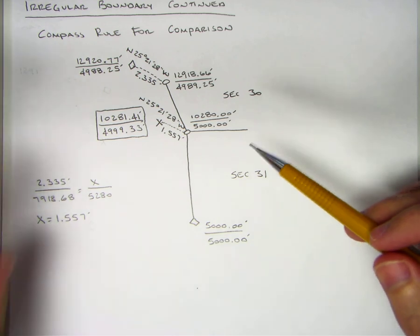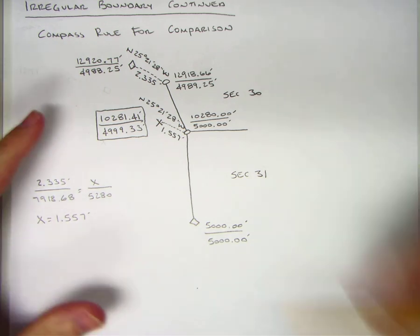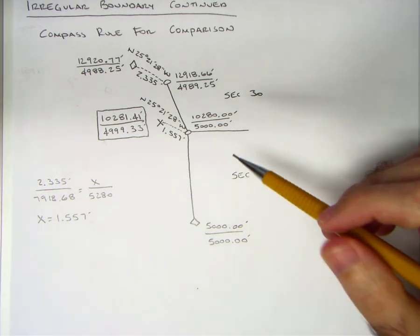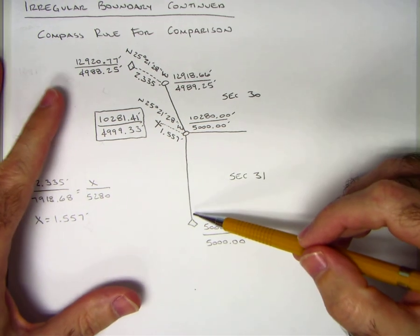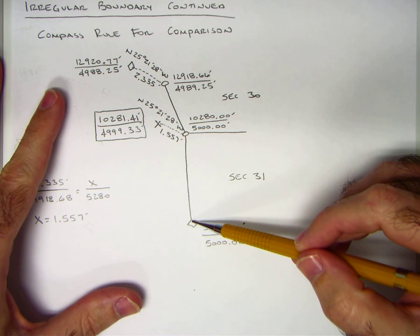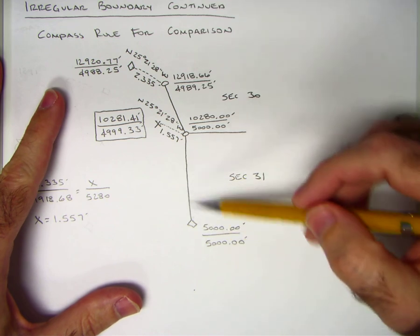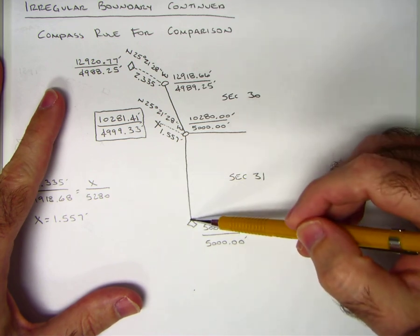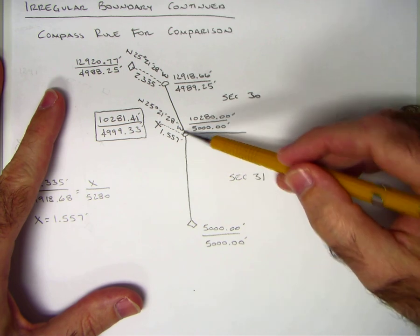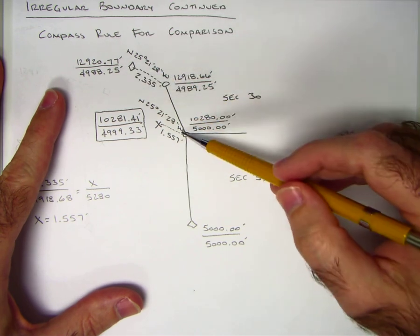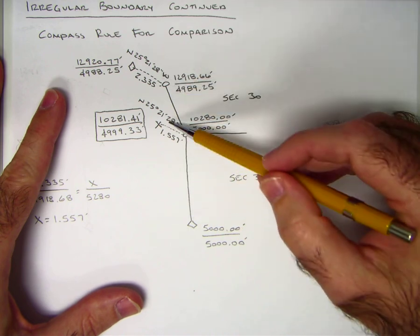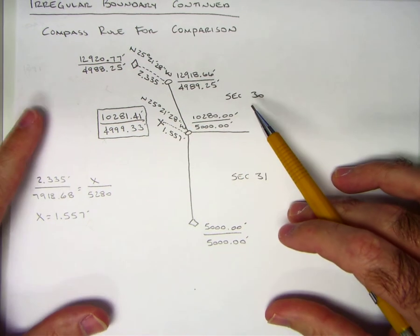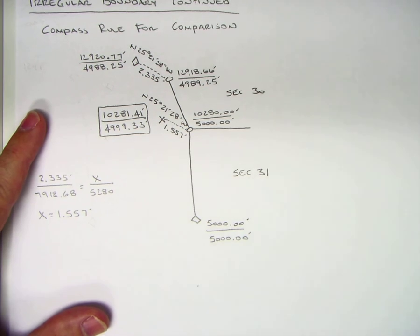Over the years what you've seen happen is the compass rule used for this type of methodology. Even the second edition of Clark when you look at how to do this particular methodology it shows the broken boundary. In the broken boundary remember from my previous example on the non-riparian line, you run the record, denote the falling and then you proportion based on the actual distance traversed and the bearing remains constant.